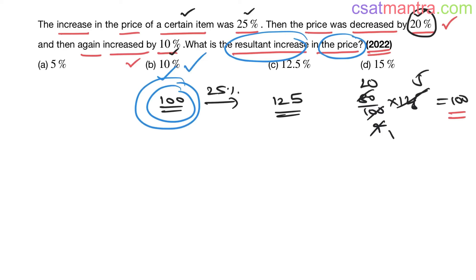You can solve this problem by successive percentage changes formula as well. How many changes are there? Three here. The formula is: a plus b plus c plus a into b by 100 plus b into c by 100 plus c into a by 100 plus a into b into c by 100 into 100.